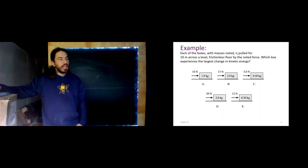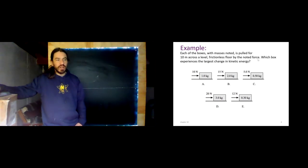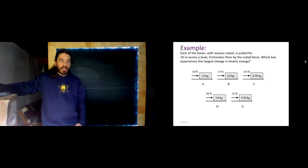Let's do a quick example. In each of these boxes with masses noted, they are pulled for 10 meters across a frictionless floor by a noted force. Which box experiences the largest change in kinetic energy? You'll see here they have different masses, and we are applying different forces for the same distance. And notice that since they're moving across the floor, my force and my displacement will be parallel in all situations. Why don't you give it a thought? Select your choice, and I will see you on the other side.